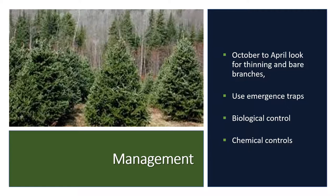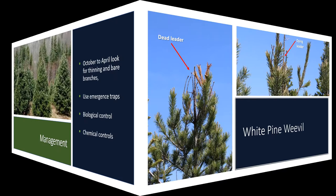Chemical controls may be warranted in years when the populations are high and there is considerable damage, but keep in mind that the populations of this pest are cyclical. No sprays are necessary in years when populations collapse. You want to monitor trees frequently for damage and only consider control once more than 10% of the current shoots have galled needles.